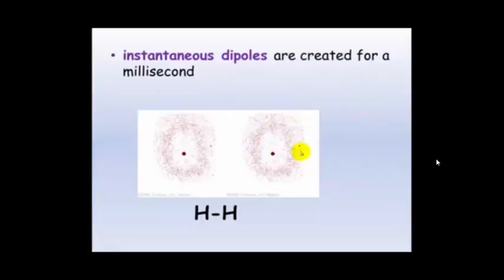The reason being, if I can stop this at any point, these electrons will be in different positions and what they can do is set up what's called an instantaneous dipole, which are created for just milliseconds.